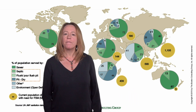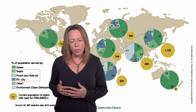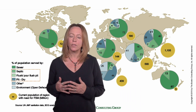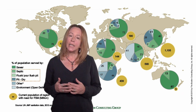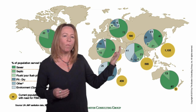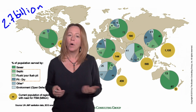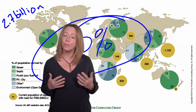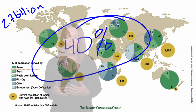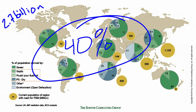Fecal sludge management represents a very significant global need. This figure made by the Boston Consulting Group illustrates the global population served by on-site sanitation, all of which are in need of fecal sludge management. Globally, 2.7 billion people — or 40% of the entire world's population — are served by on-site sanitation technologies. In urban areas of Africa, Asia, and Latin America, this accounts for around 1 billion people, and that number is expected to grow to 5 billion by 2030. In most of these cities, the majority of sanitation is provided through on-site technologies, not sewers, providing even up to 100% of sanitation coverage in urban areas.